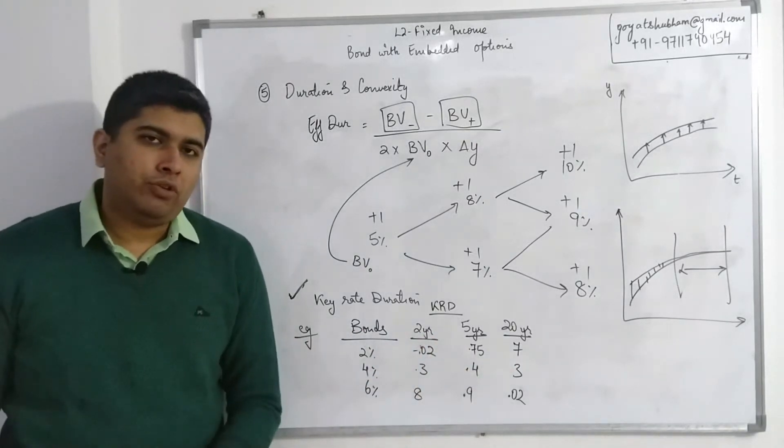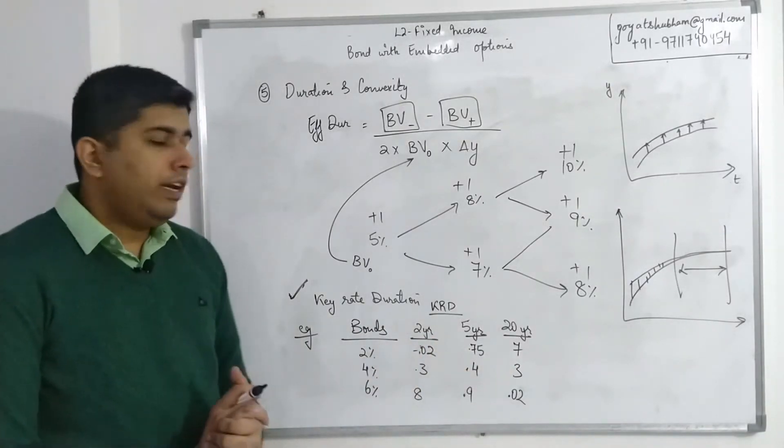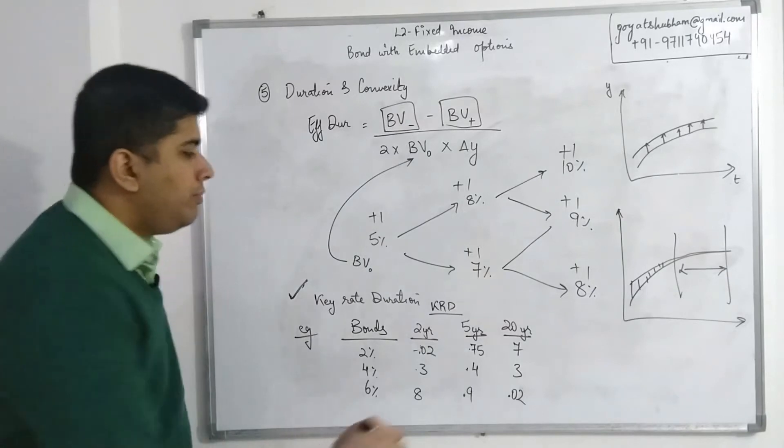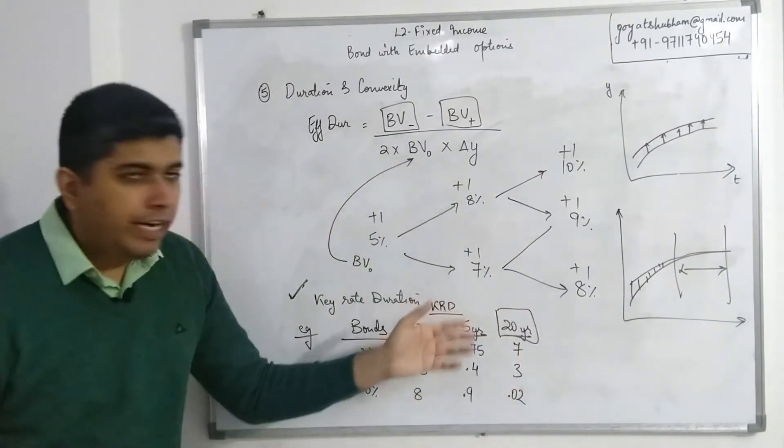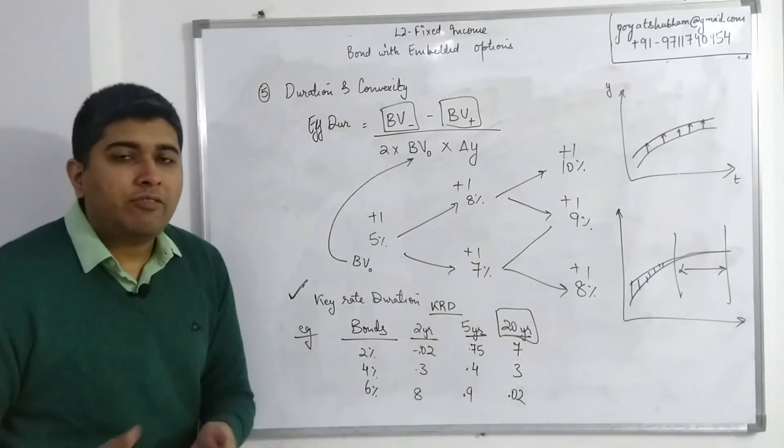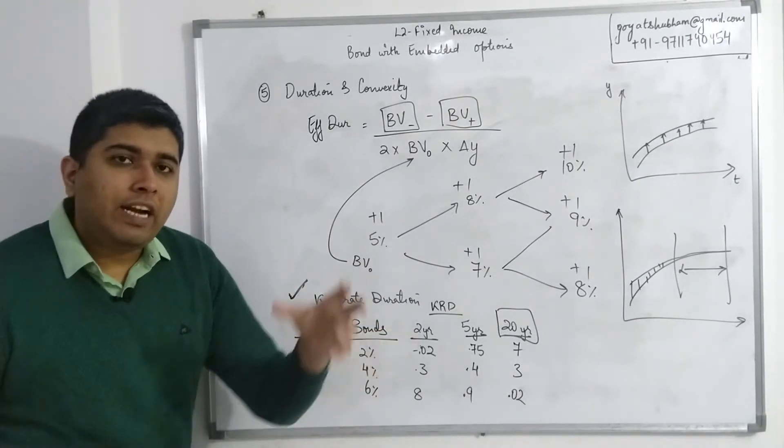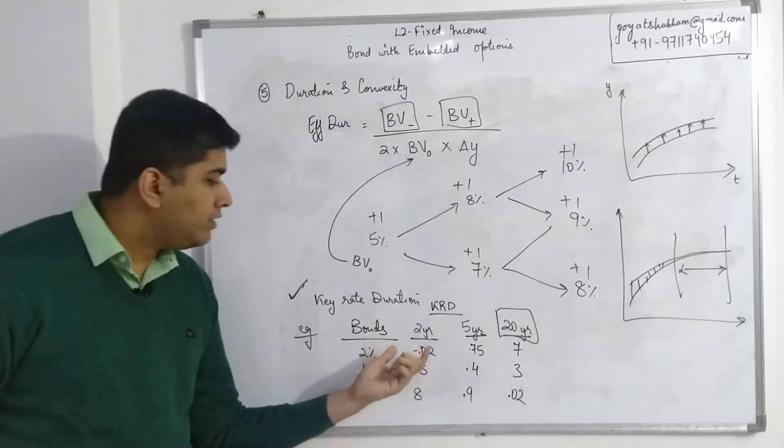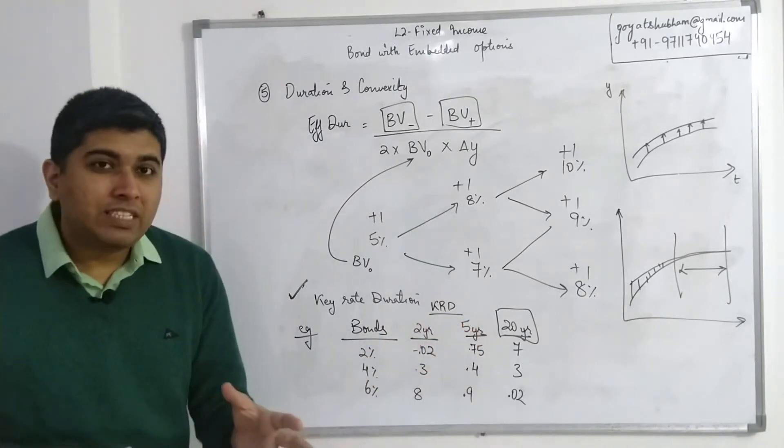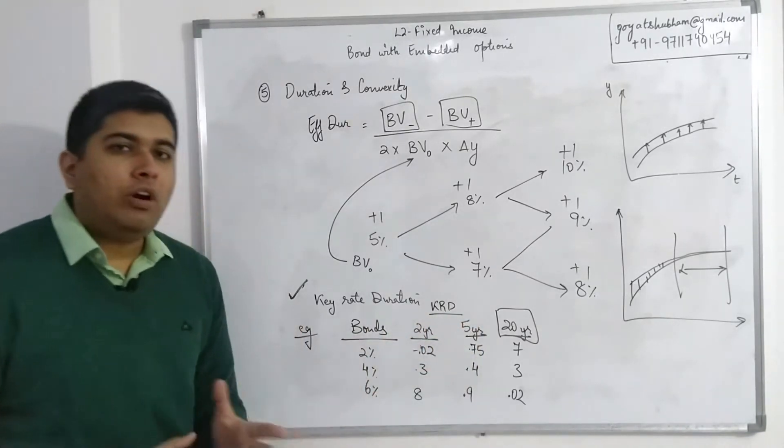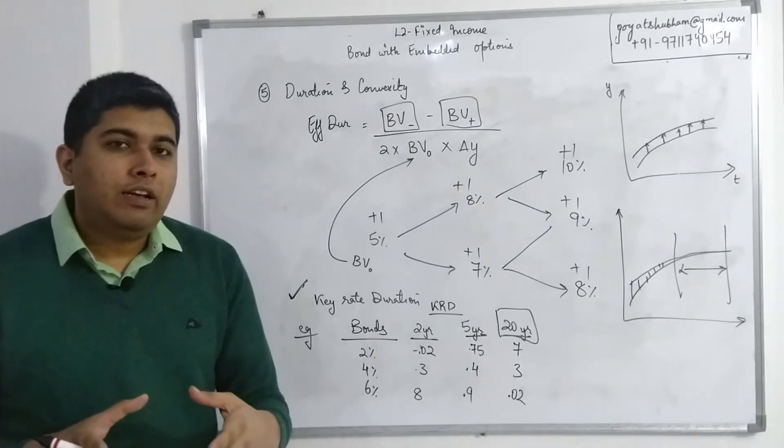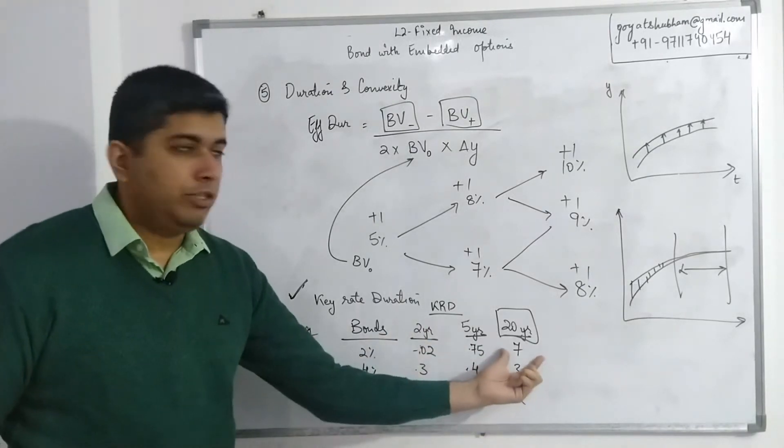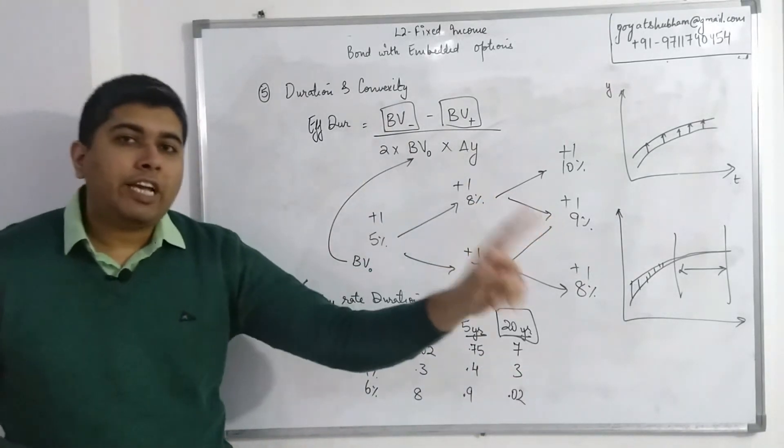The second part of what is relevant for the exam is knowing how to interpret it. The question could give you this kind of information—this would be given, how these are calculated is not relevant for you. Once you have these, the next thing is the question could ask you information that which of these bonds is most sensitive to long-term interest rate changes. Effectively, key rate duration means how sensitive my bond is to the interest rate changes at a particular maturity. So for the 2% bond, the duration is 7 for 20 years in comparison to 0.02 and 0.75 for 2 years and 5 years, which means this 2% coupon bond is not as volatile with respect to interest rates in short term or even medium term as it is for longer term maturities.